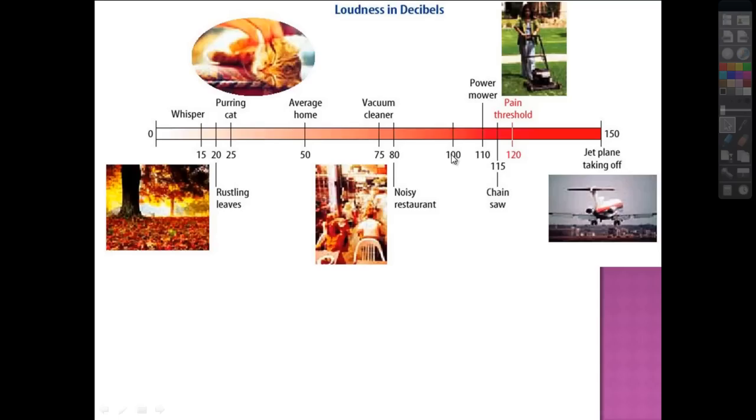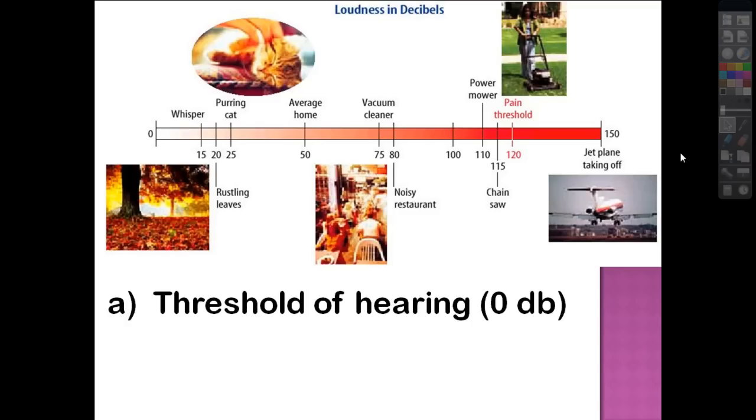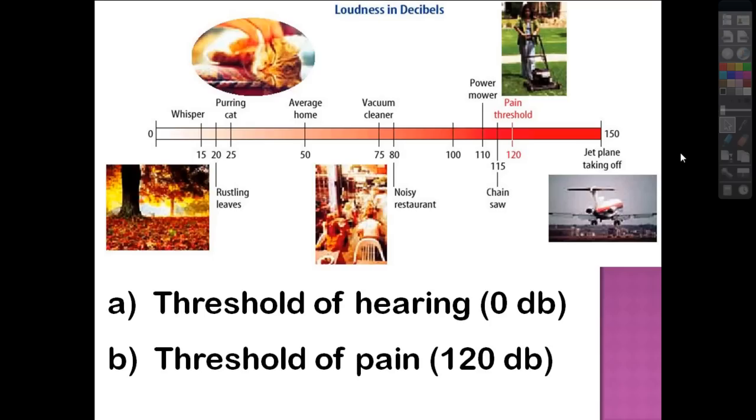Vacuum cleaner is pretty loud. For some reason, we don't have anything for 100. You have a power mower, which is about 110 decibels. Chainsaw, a little bit louder still. And then at 120, you hit what's called the pain threshold. And that's where sound can actually cause physical discomfort and even like hurt your sensitive bits in your ears. And way up here, we have jet plane taking off. You see people working out on runways at airports. They always got hearing protection on. So threshold of hearing, the lowest sound we can hear is zero decibels. Well, we can't really hear it. That's just as low as it goes. And the threshold of pain is 120 decibels.